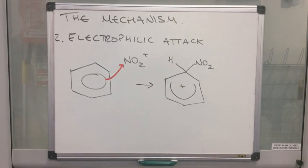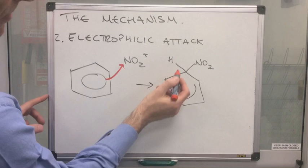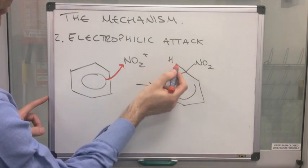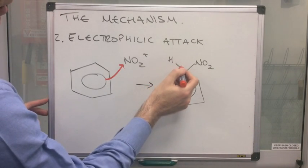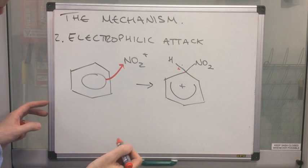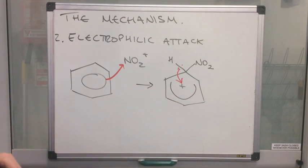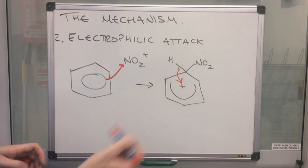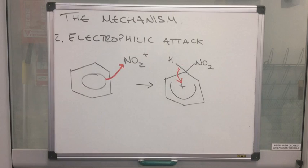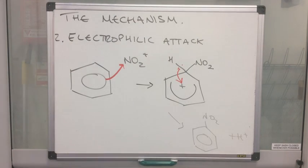So if we pick up the mechanism again now, I did say when I drew this on the board that it was unstable, it's an intermediate, it's not going to last for very long. To stabilize itself, what it does is it basically sacrifices this hydrogen. And the way it does that is the pair of electrons in that bond is sent back in to reform the pi electron cloud. So I'll just draw up what the product of that would look like.